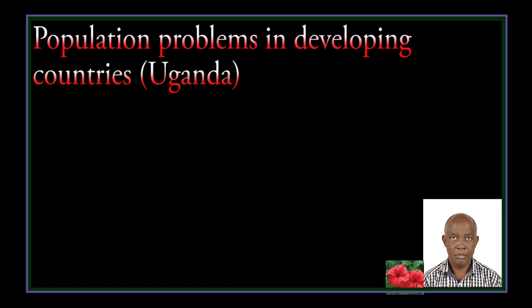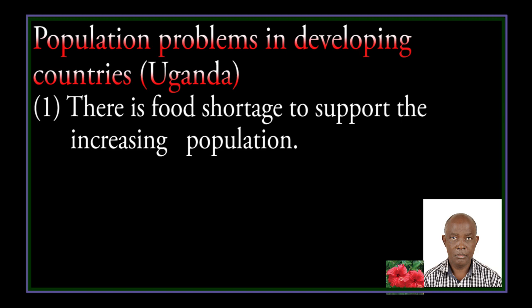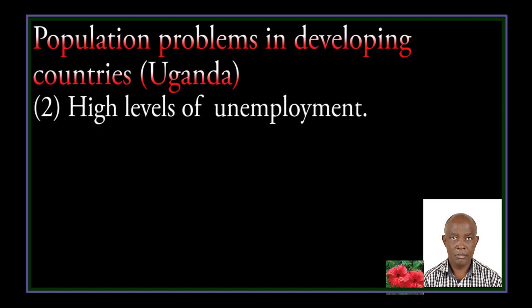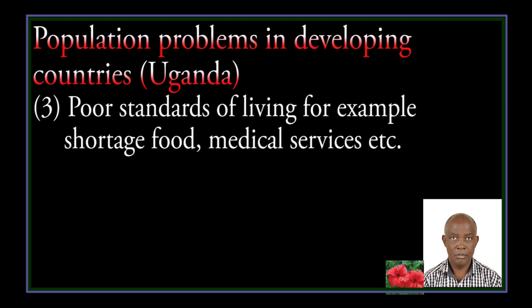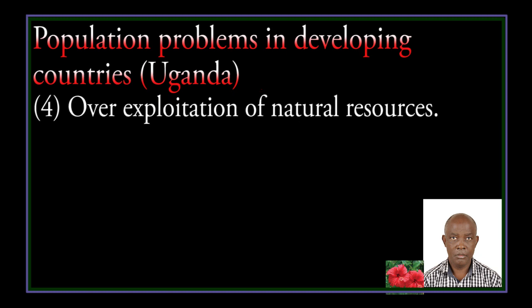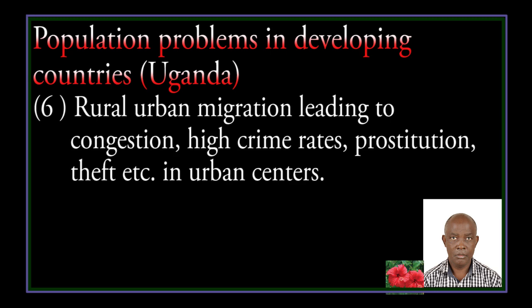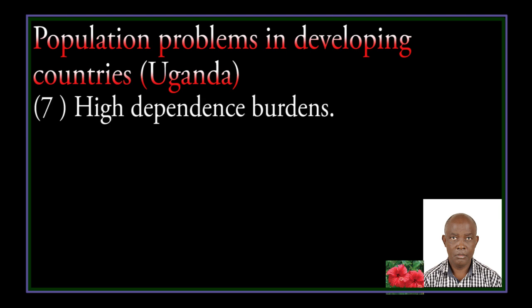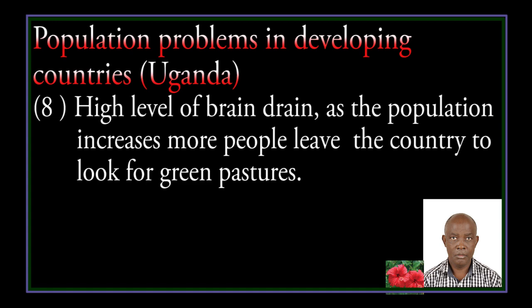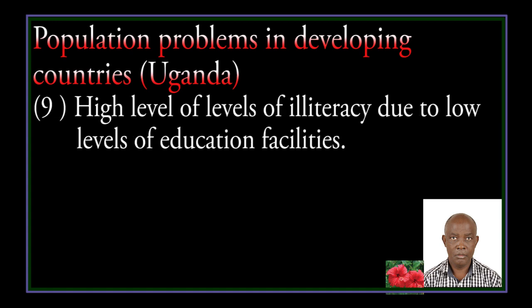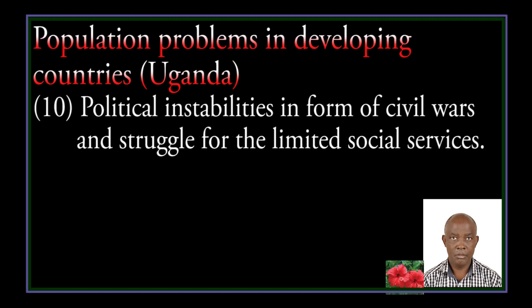Population problems in developing countries like Uganda: there is food shortage to support the increasing population. High levels of unemployment. Poor standards of living — for example, shortage of food, medical services and so on. Overexploitation of natural resources. Rural-urban migration leading to congestion. High crime rates, prostitution and theft in urban centers. High dependence burden. High level of brain drain — as the population increases, more people leave the country to look for greener pastures. High level of illiteracy due to low level of education facilities. Political instability in the form of civil wars and struggle for limited social services.